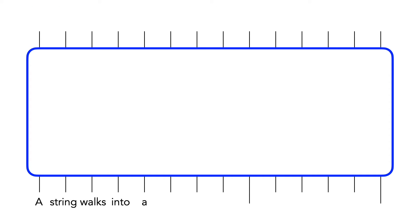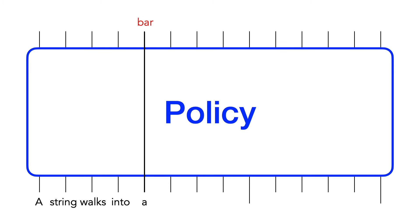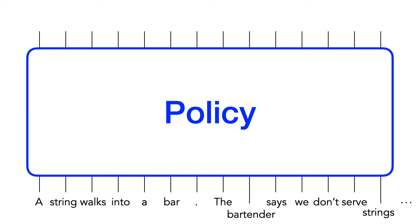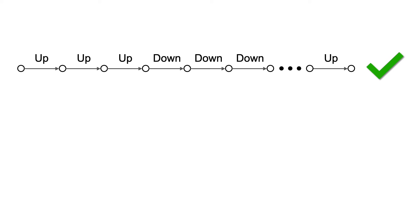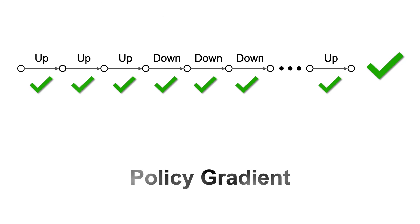So what does this have to do with reinforcement learning? Well, you can think of the LLM as a policy that predicts an action — the next word to generate. You don't get the reward until you're done generating the joke. This is like part one of our video, where you execute a series of moves, find out whether you won or lost, and go back in time to reward each individual move. This is the policy gradient method.